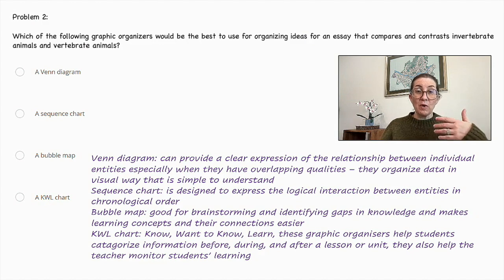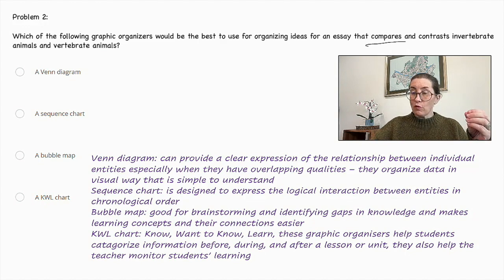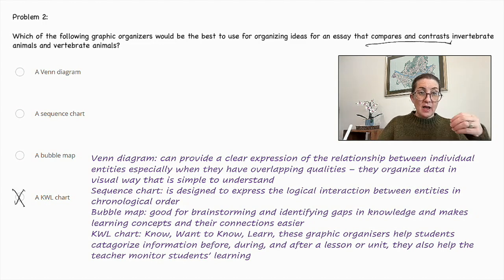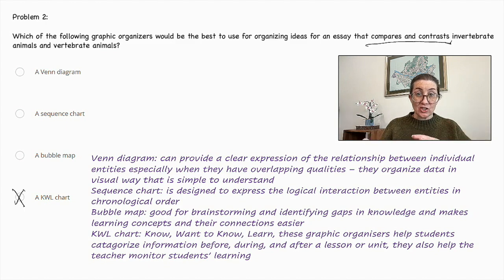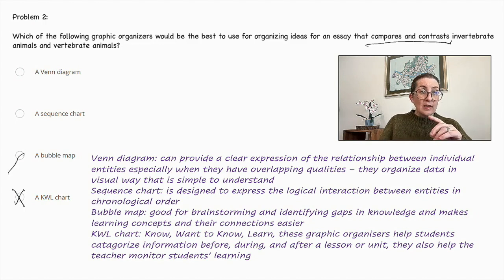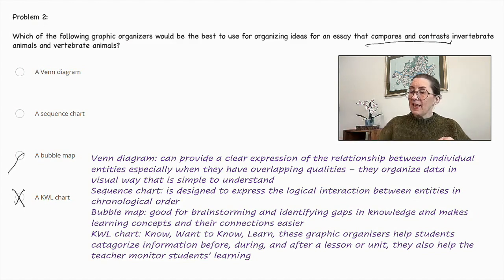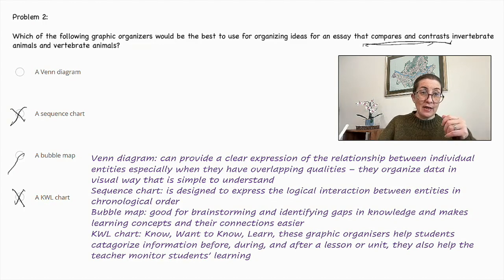The KWL chart also helps the teacher monitor students' learning. So I'm not sure that is the best for comparing and contrasting — we can rule that one out. A bubble map is good for brainstorming and identifying gaps in knowledge and makes learning concepts and their connections easier, so I'm not going to rule that out right away. A sequence chart is designed to express the logical interaction between entities in chronological order, and that's not necessary in a compare and contrast, especially of animals — so we're going to cancel that one out.